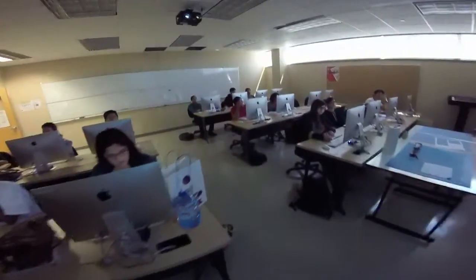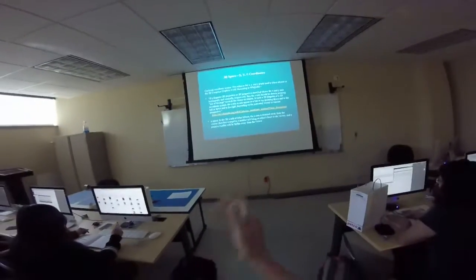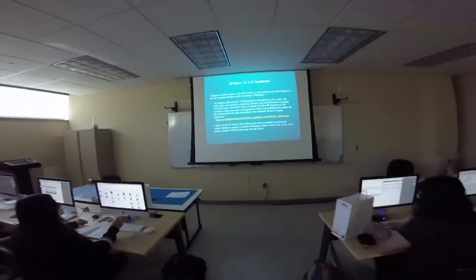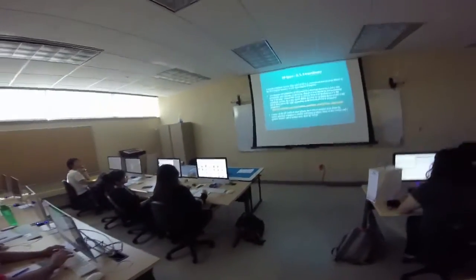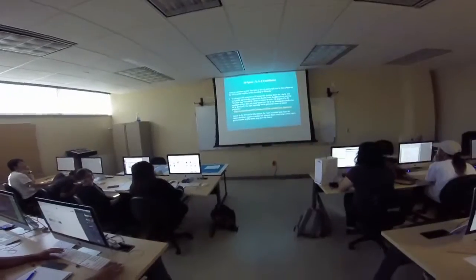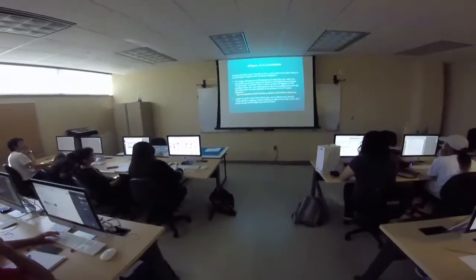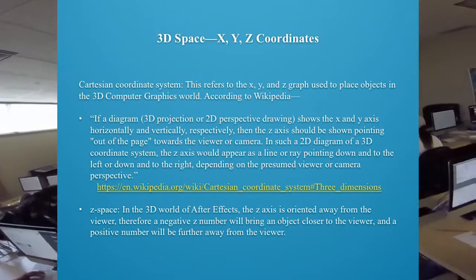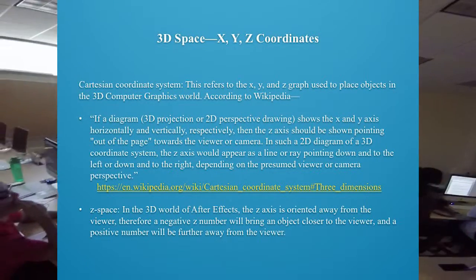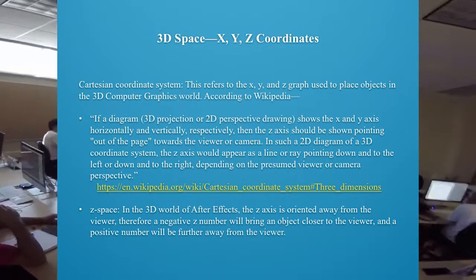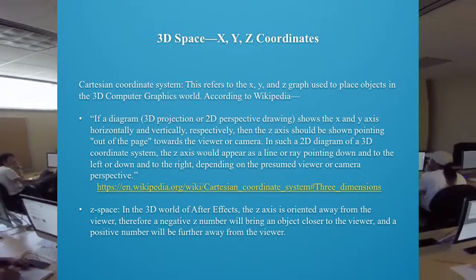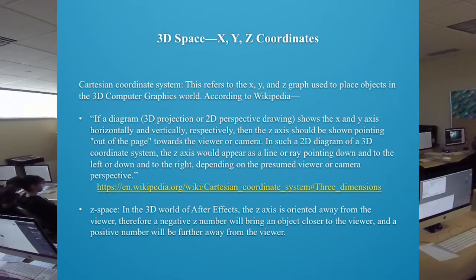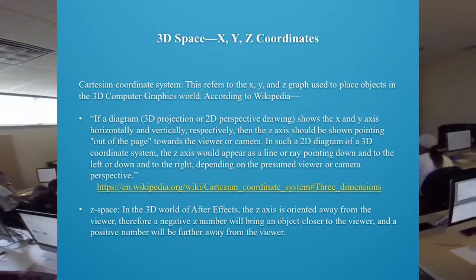3D space. Rene Descartes was a famous mathematician who invented the coordinate system we use for 3D space — the Cartesian coordinate system, which refers to an X, Y, and Z graph. This is what we use in 3D space.